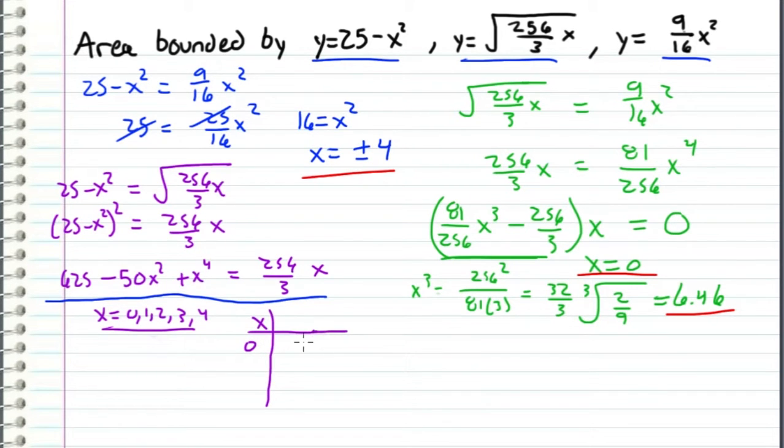So for x equals 0, I get 625 equals 0, and that's way off. So now let's plug in 4, and I get 81 equals 341.333.